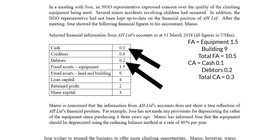Going straight to current liabilities, there is only one current liability: creditors of 0.8 million. If you compare the current liability of 0.8 to the current assets of 0.3, you can already start to see issues with this business's balance sheet, especially in terms of liquidity — which I'll look at once the balance sheet is complete.